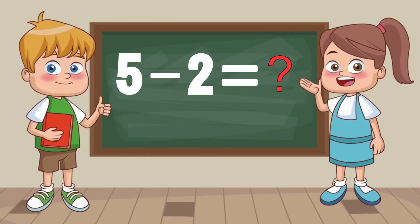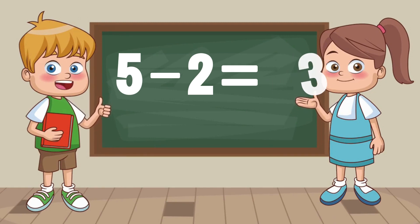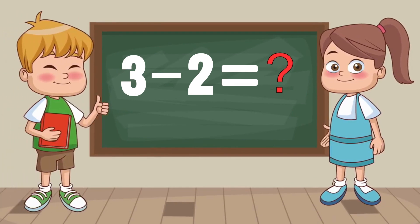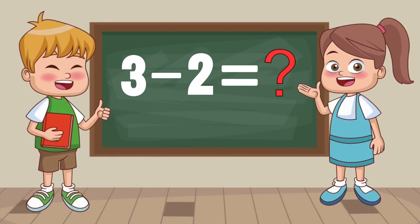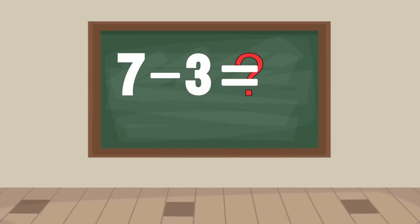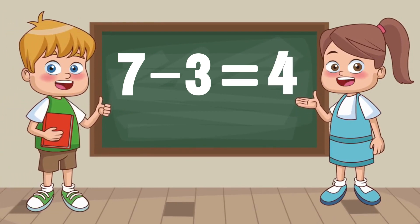5 minus 2 equals... 3. 3 minus 2 equals... 1. 7 minus 3 equals... 4.